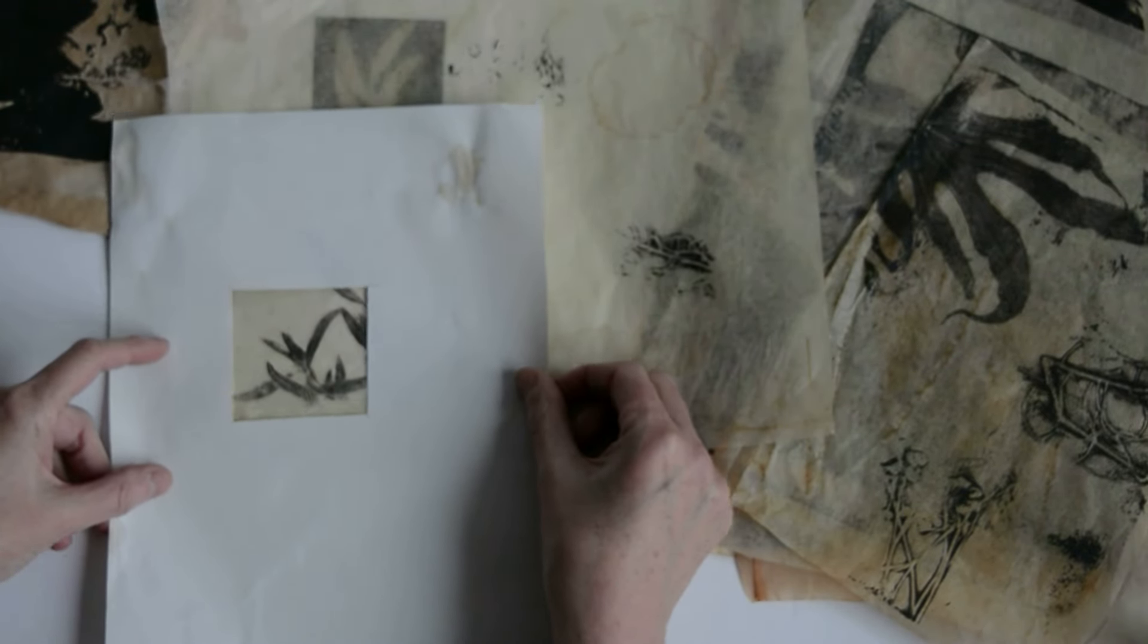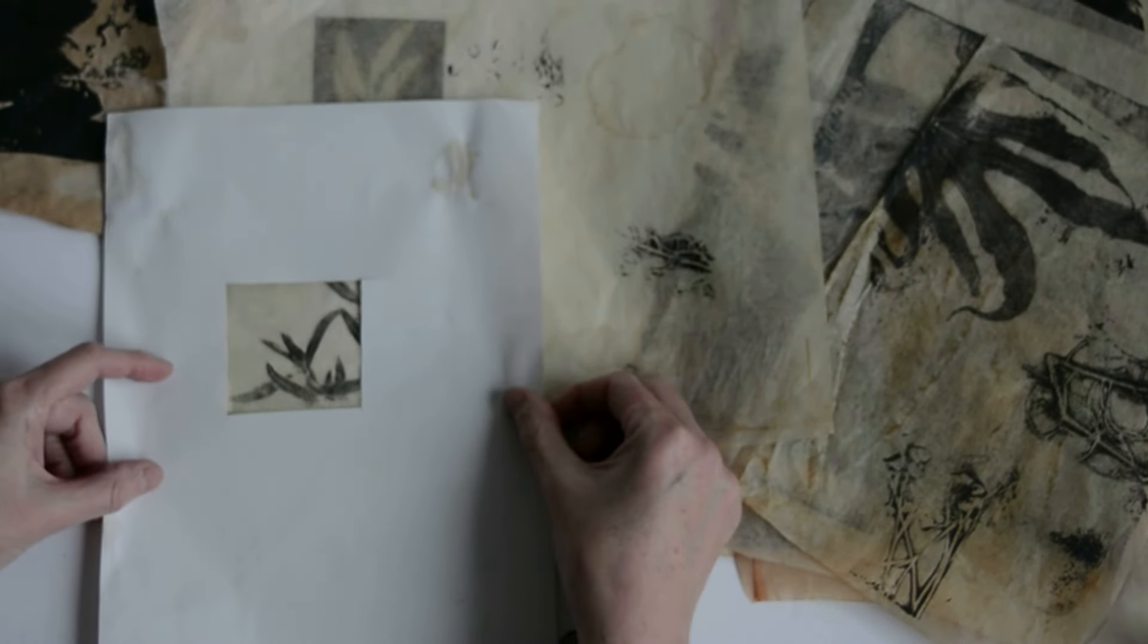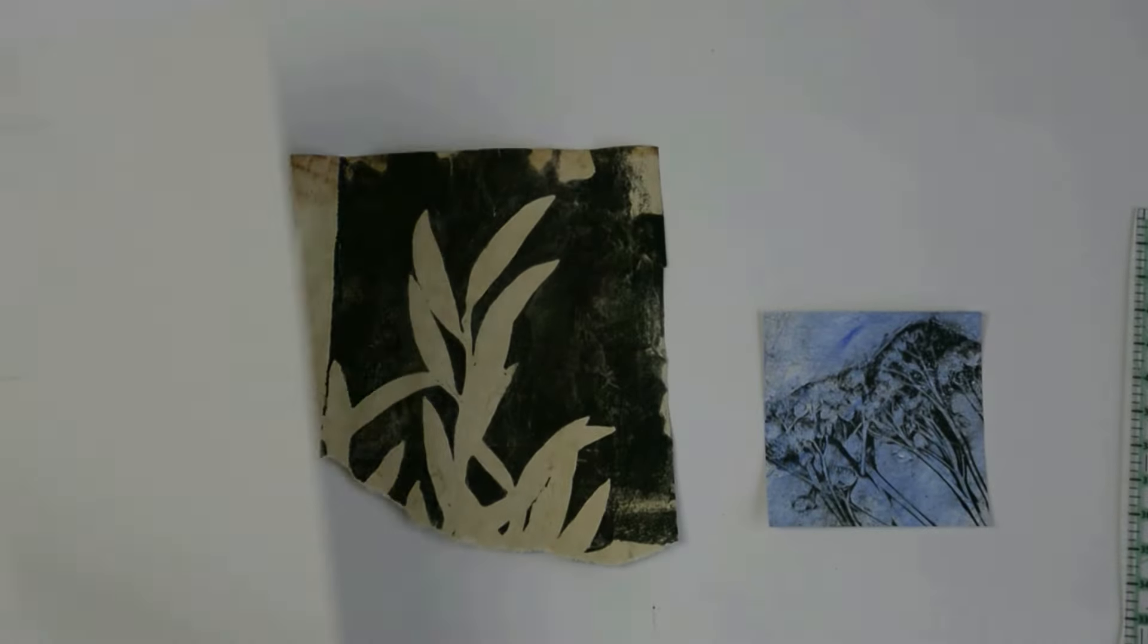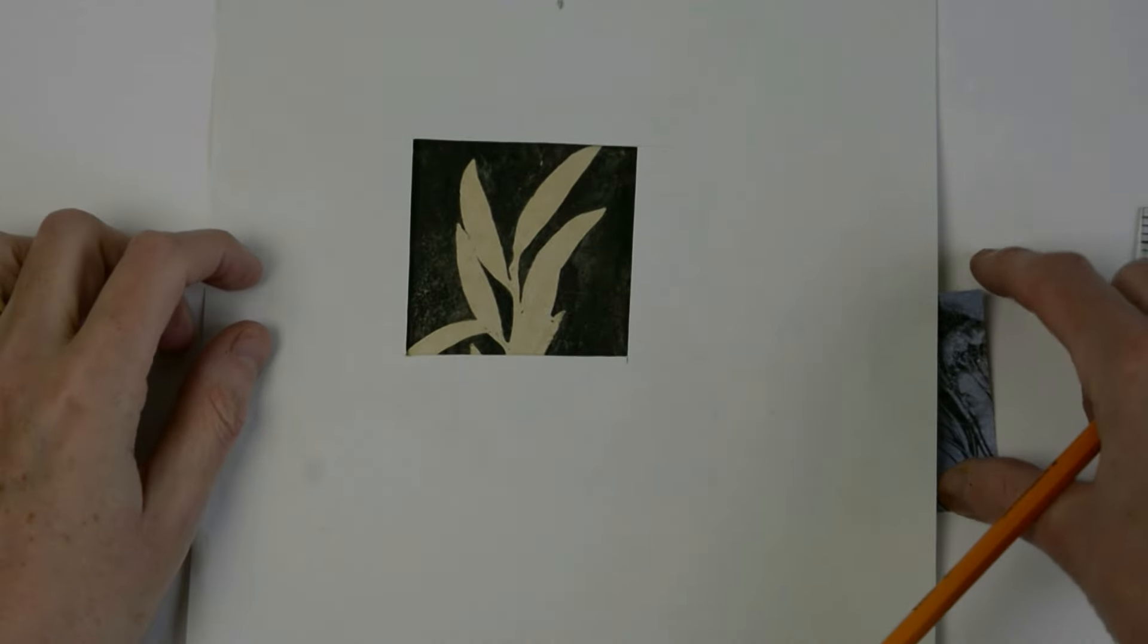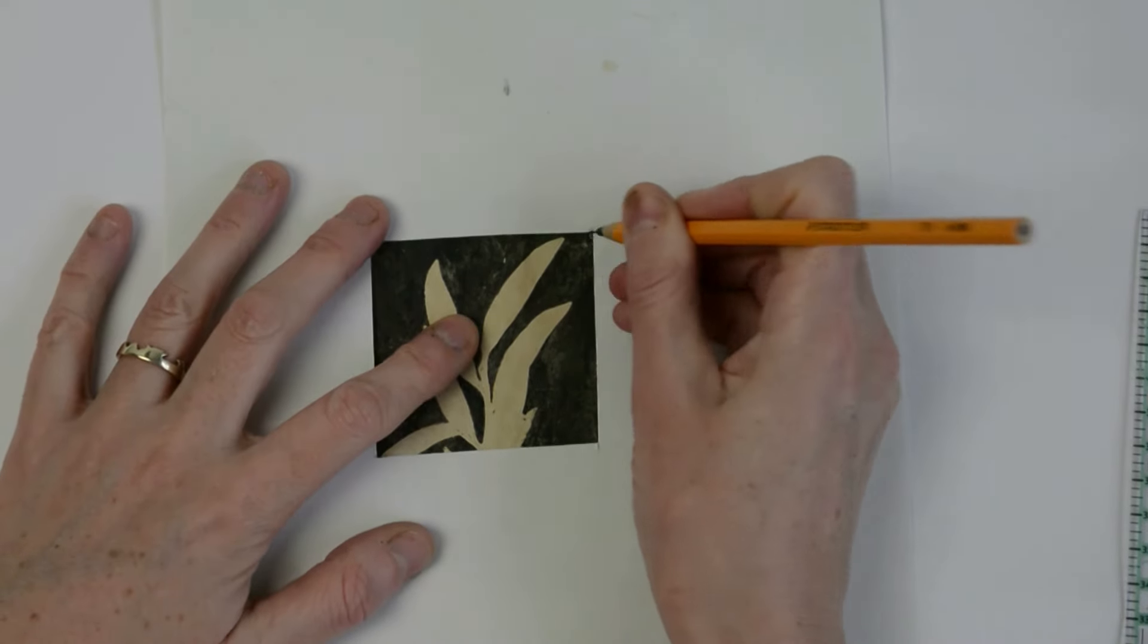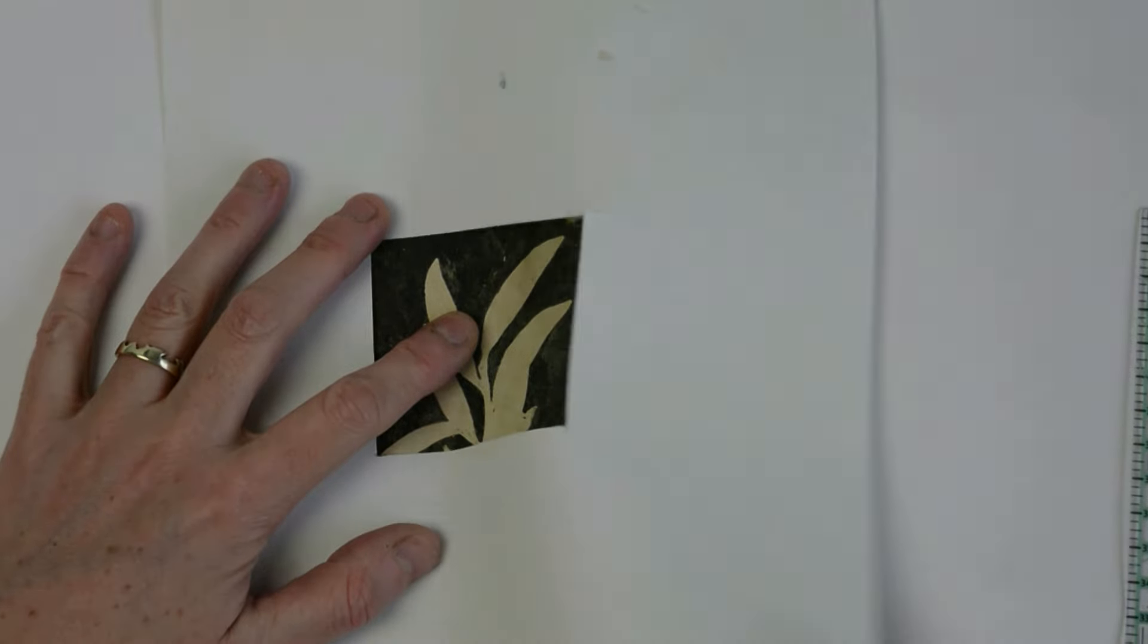You can use a pencil to just dot in the corners as a guide for either ripping or cutting out your finished prints. So here's my pencil. I prefer a ripped edge to be honest, so that's what I'm going to do.